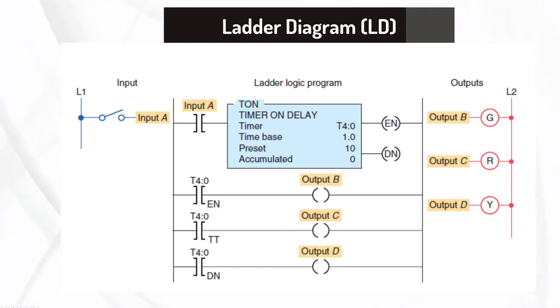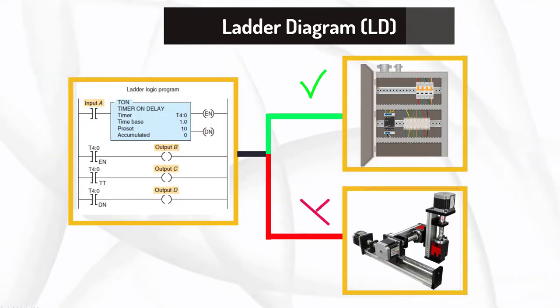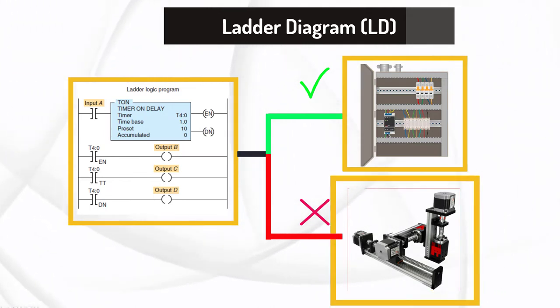The main advantages of the ladder diagram language are: The rungs allow it to be organized and easy to follow. It supports online editing very successfully. And the main disadvantage is that there are some instructions that are not available, which might make it more difficult for programming such as motion control systems.